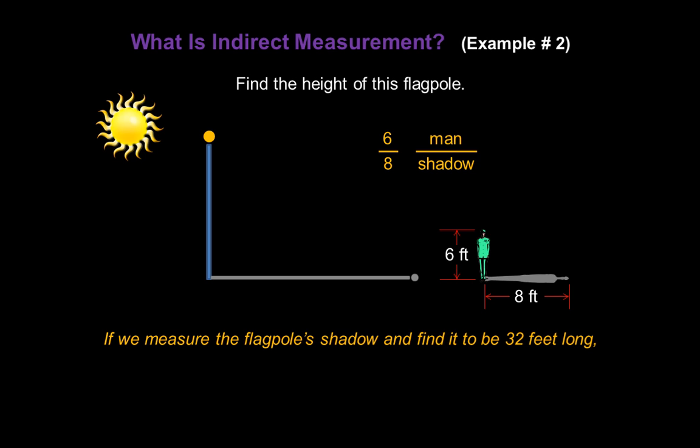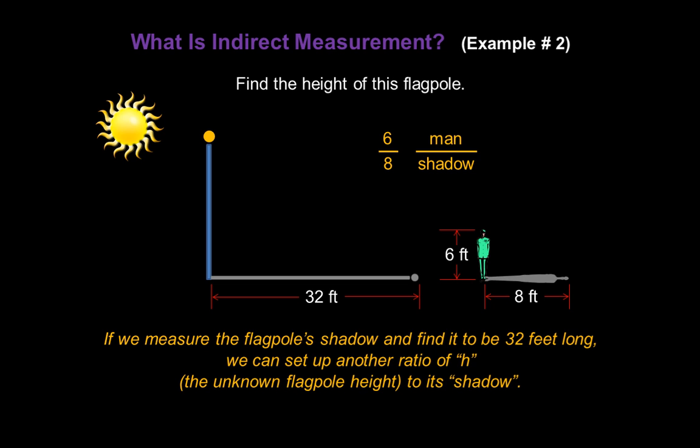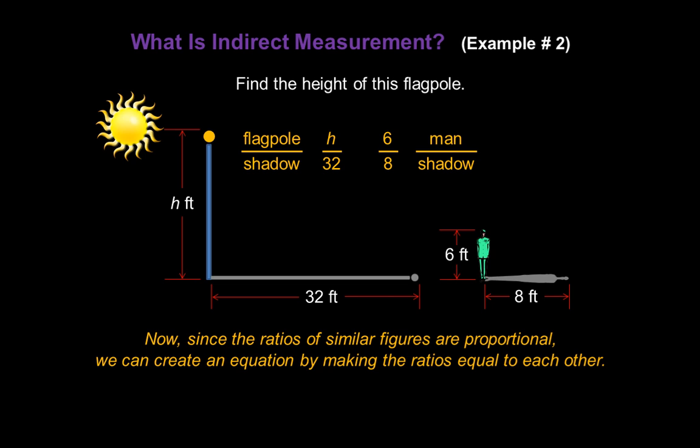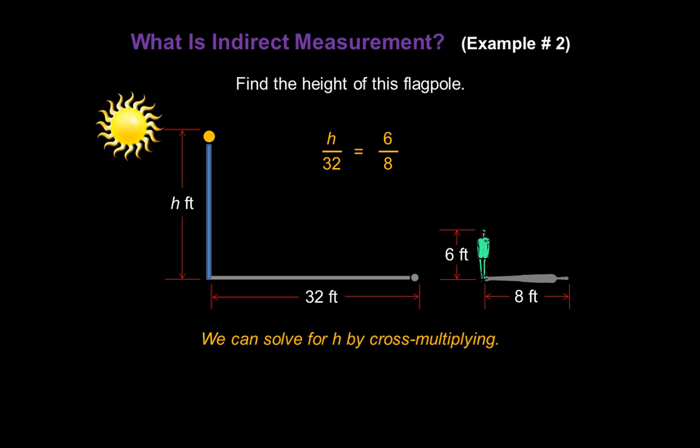Now if we measure the flagpole's shadow and find it to be 32 feet long, we can set up another ratio of h, the unknown flagpole height, to its shadow. The flagpole over the shadow will be h over 32. Now we can be confident we've set up our ratios properly because both shadow numbers are in the denominators and the actual heights of our objects are in the numerators. Now since the ratios of similar figures are proportional, we can create an equation by making the ratios equal to each other.